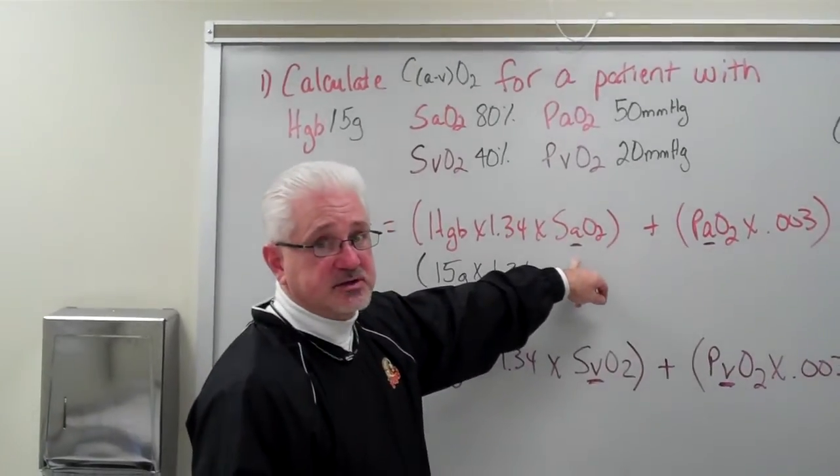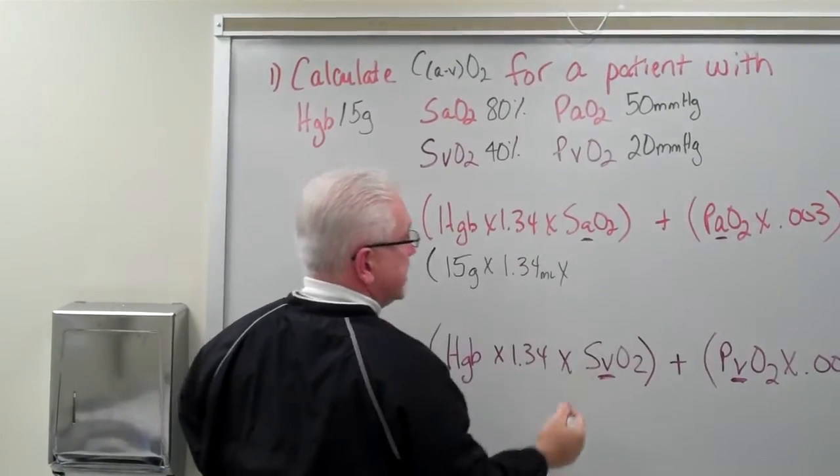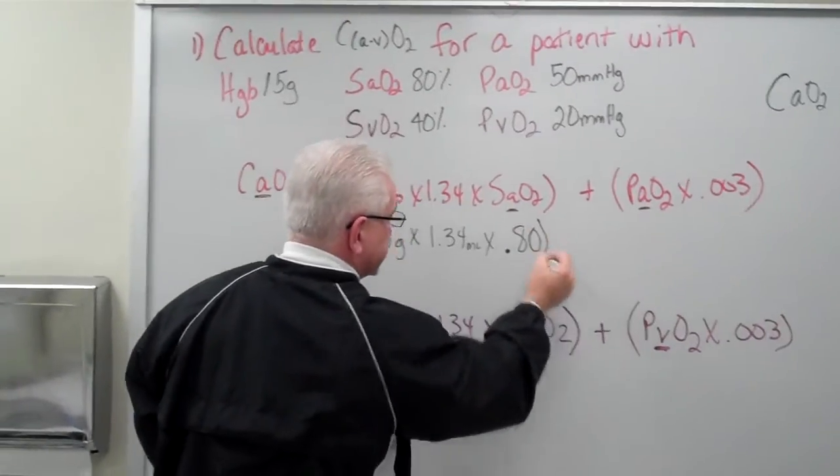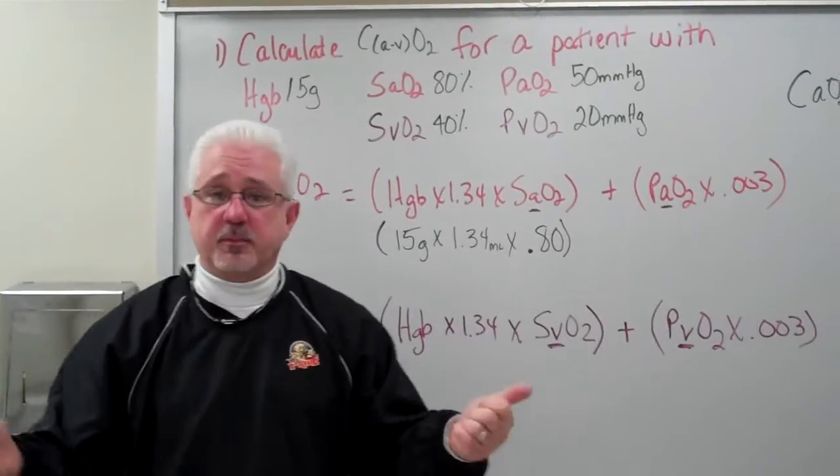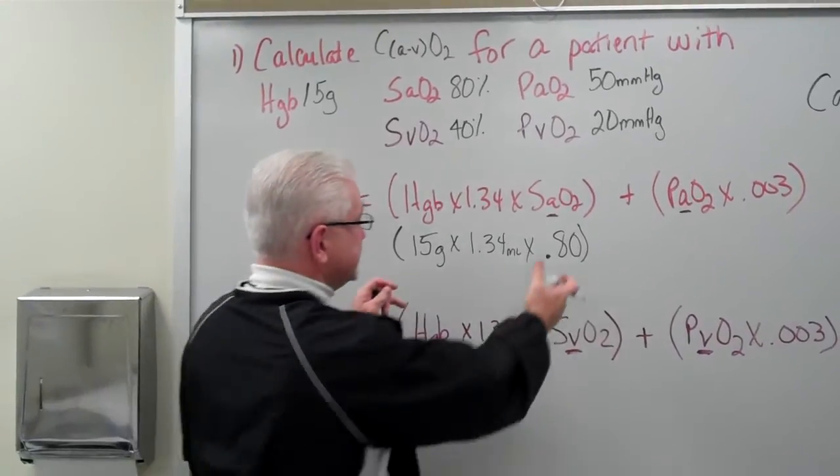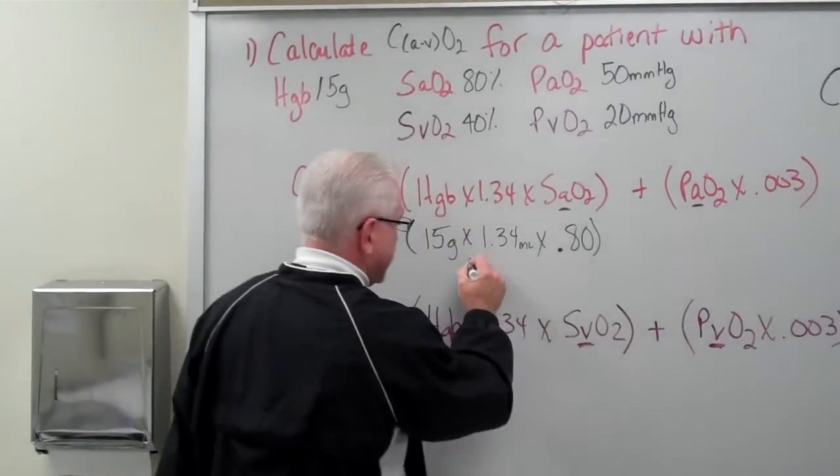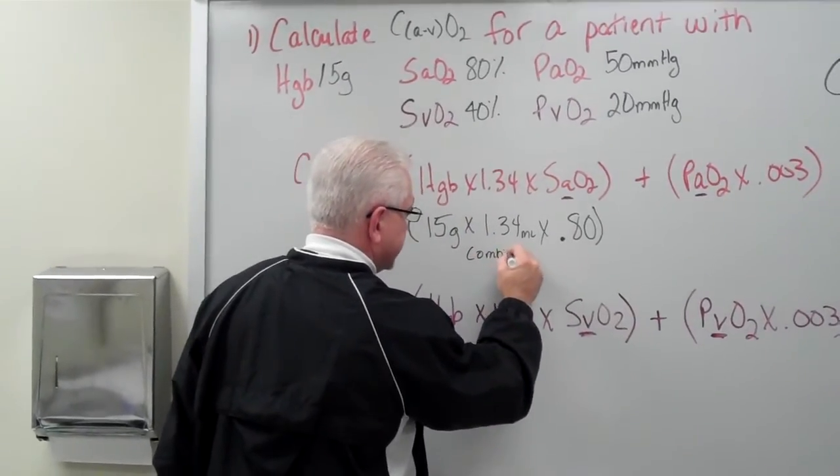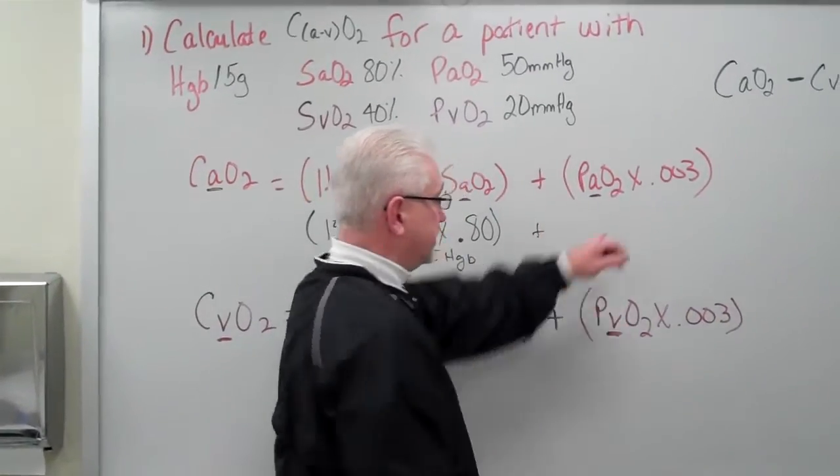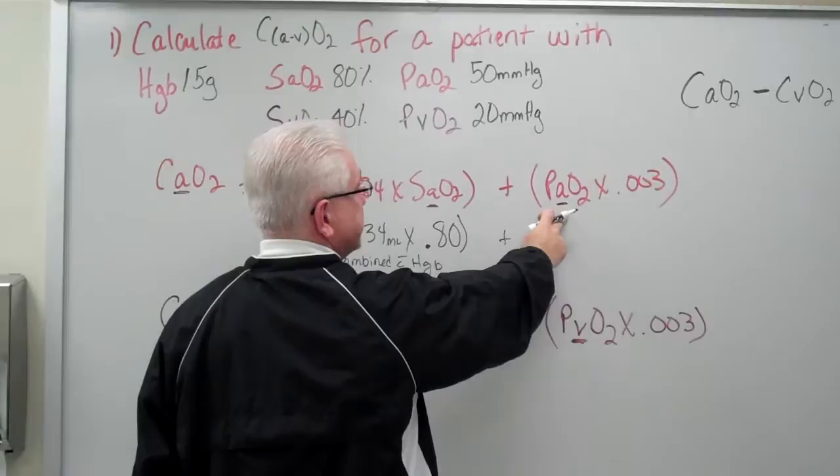Each gram of hemoglobin can carry 1.34 milliliters of oxygen. So it's 15 grams times 1.34 milliliters times, remember, we're looking at saturation of arterial blood. So I have to look up here and where's my saturation? Oh, here it is, 80%. Don't forget, 80% can be represented as 0.80. It is very important that you remember your parentheses and remember the PEMDAS, your order of operations. We have to do what's inside the parentheses first before we do anything else. Well, this is the combined with the hemoglobin.